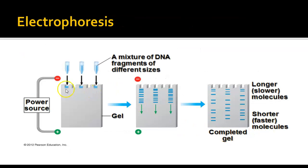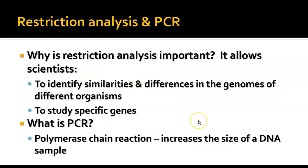Here's how electrophoresis works as a reminder: we put our samples in wells at one end of the gel. When electricity flows through the gel, it causes the fragments to move. Smaller fragments move faster and larger ones move more slowly, producing a pattern of bands. This lets us identify similarities and differences in the genomes of different organisms or individuals, study specific genes, and determine how closely or distantly related organisms are. There are lots of different applications.